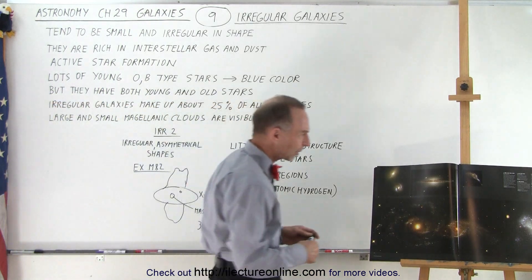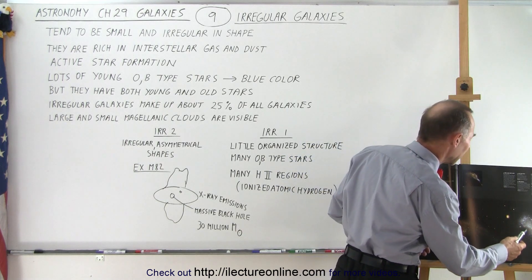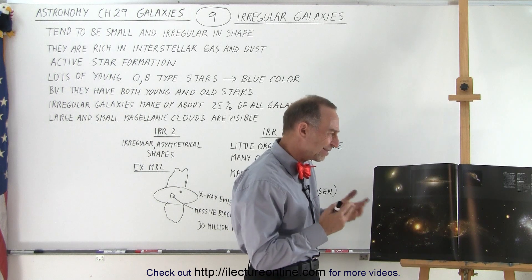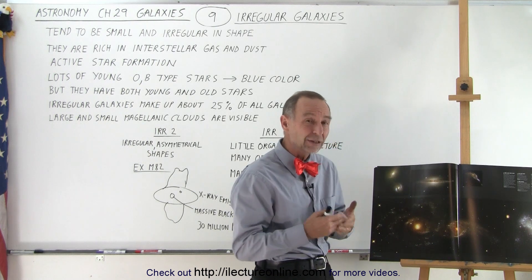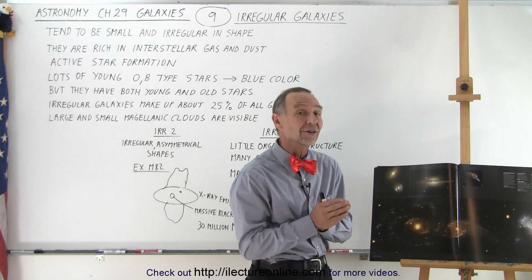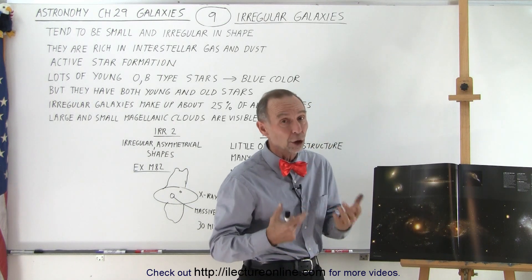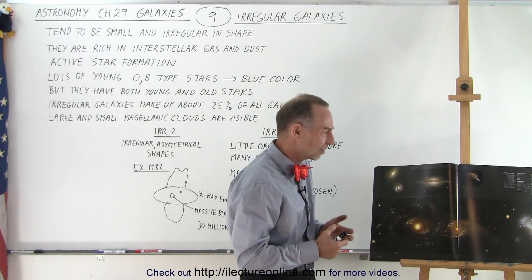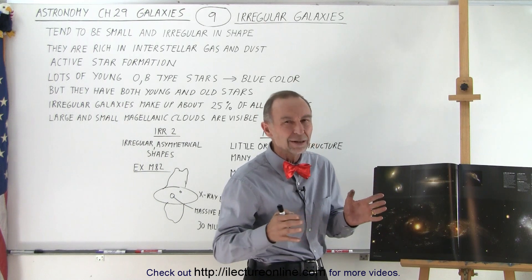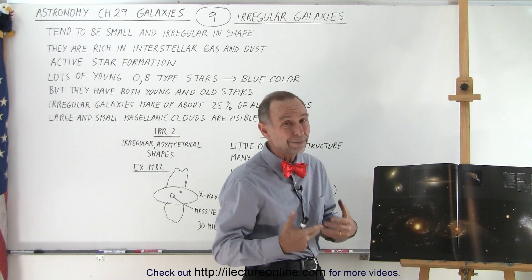Here we have a really nice picture. Right here is the irregular galaxy NGC 1427A. It's about 65 million light years from us and it's about 32,000 light years in length. Now that's actually quite large for an irregular galaxy. Typically irregular galaxies are about 5 to 10 or 15 thousand light years across, so this one is an unusually big one.